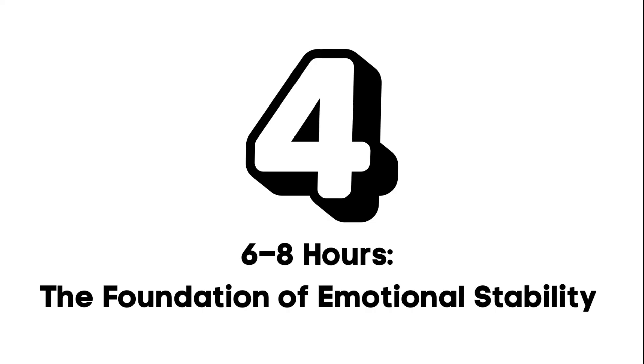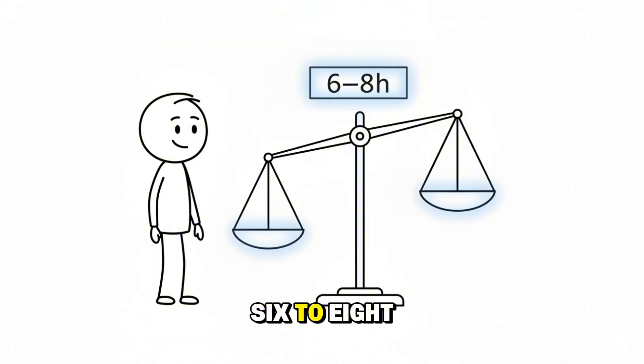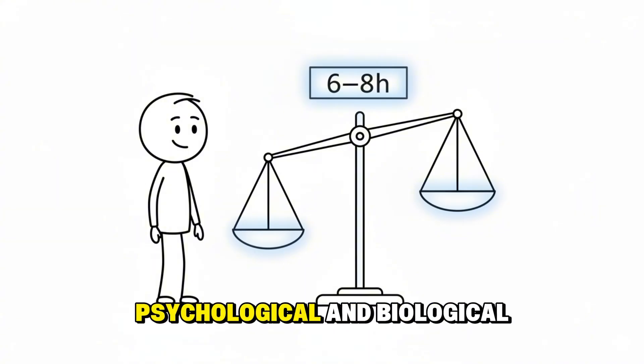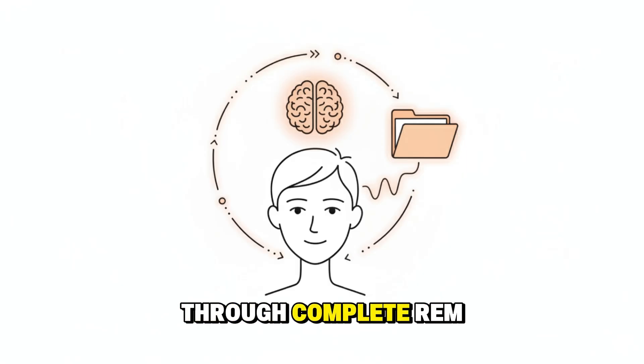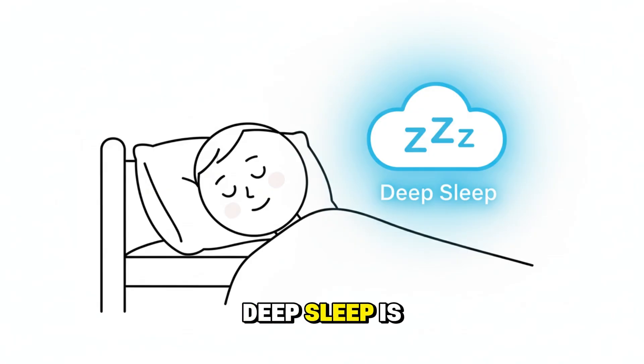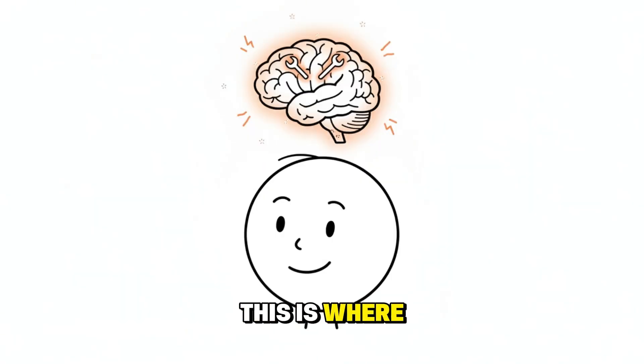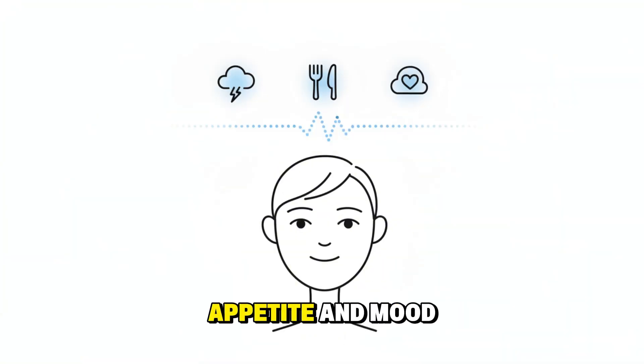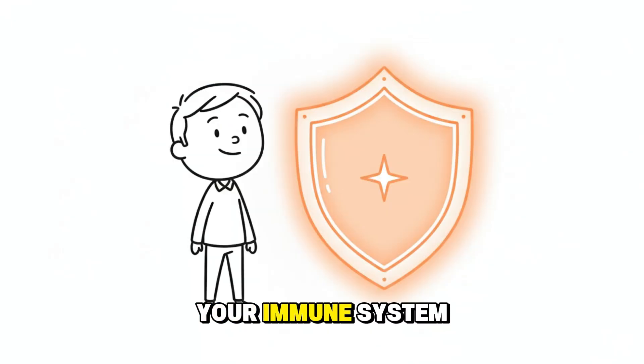Fourth, six to eight hours. The foundation of emotional stability. Six to eight hours is the range where most psychological and biological systems find balance. Your brain moves through complete REM cycles, allowing you to process emotional memories and stabilize your mood. Deep sleep is strong in this range. This is where the brain repairs itself. Hormones that regulate stress, appetite, and mood return to their normal rhythm. Your immune system strengthens, making it easier to stay healthy.